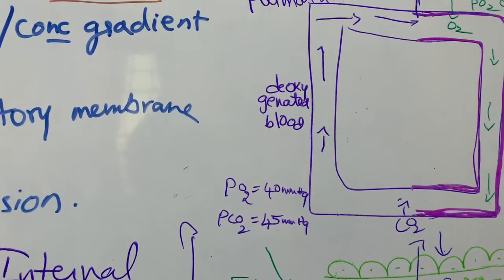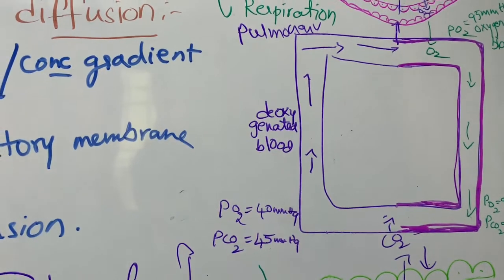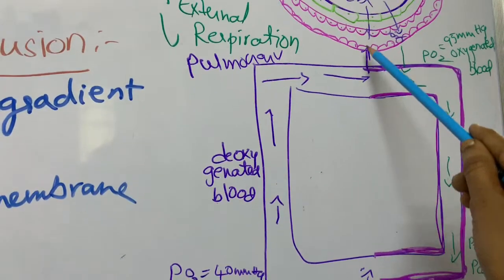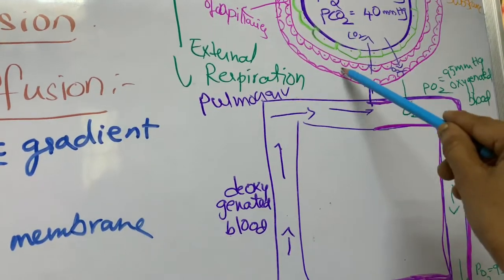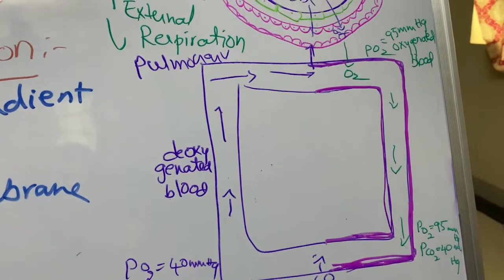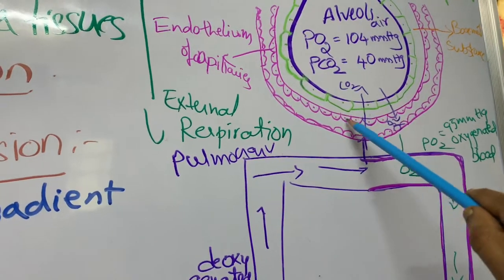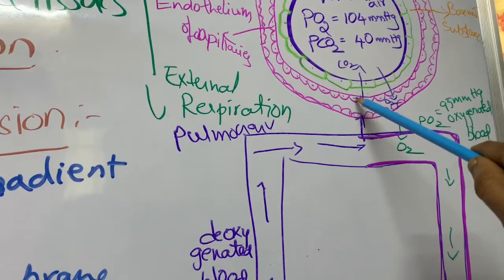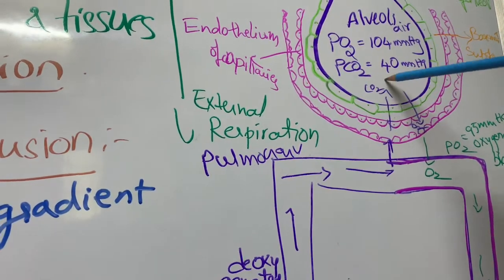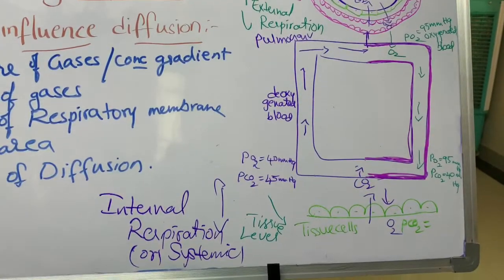Deoxygenated blood is carried by systemic veins to the right part of the heart, and then through the pulmonary artery to the lungs. In the lungs, the pCO₂ of deoxygenated blood is 45 mm Hg and the alveolar pCO₂ is 40 mm Hg, so carbon dioxide from the deoxygenated blood enters the alveolar cavity and is expelled from the body.